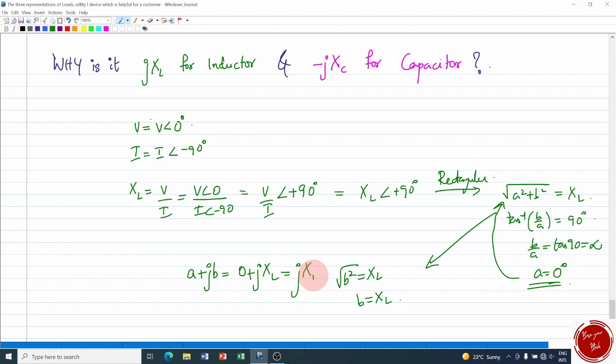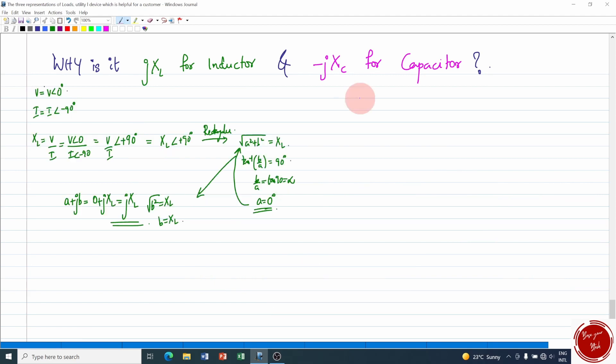And for capacitor, if V = V∠0° then the corresponding current is equal to some magnitude I∠+90° because current leads voltage in the case of capacitor.